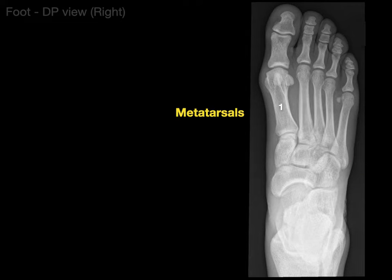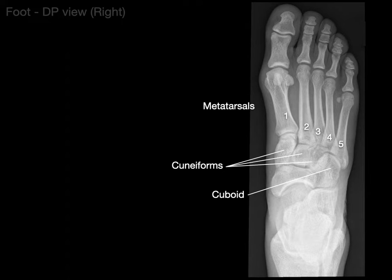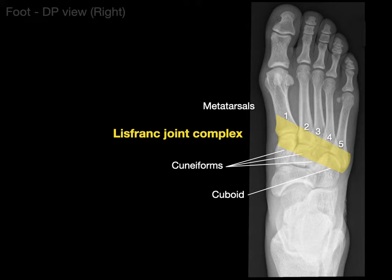Our metatarsals are 1, 2, 3, 4, and 5. They are named so that 1 aligns with our great toe and 5 with our little toe. On the 5th metatarsal, we can see the base and the head. All metatarsals have a base and a head, but the 5th metatarsal is going to become clinically important. When we look at the 5 metatarsal bases together with the 3 cuneiforms and the cuboid, they form a joint complex called the Lisfranc joint complex — an important one clinically, as a fracture that misaligns these midfoot bones is significant.